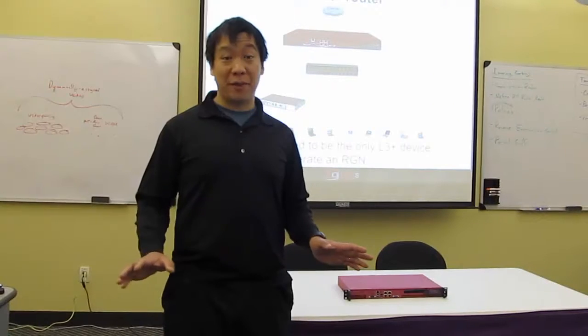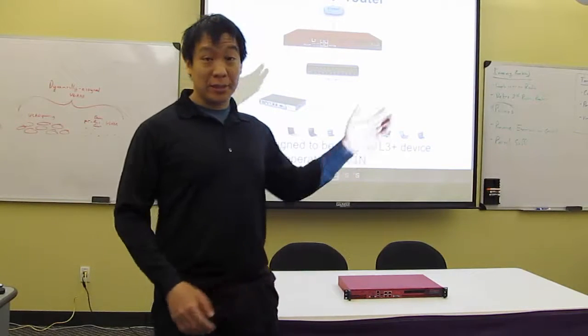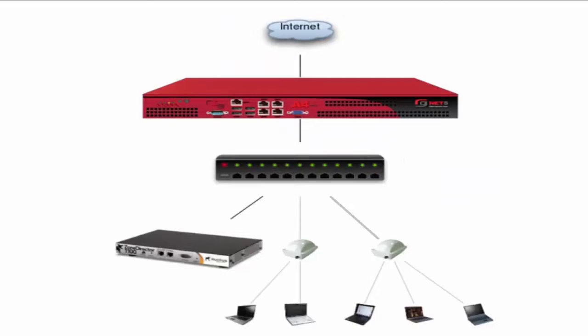The RXG is designed to be the only device you need to operate a revenue-generating network. If you look at the slide here, you'll see the RXG on this network diagram. It's the only device between the distribution network, which is the switches and wireless infrastructure, and the internet connection shown at the top.